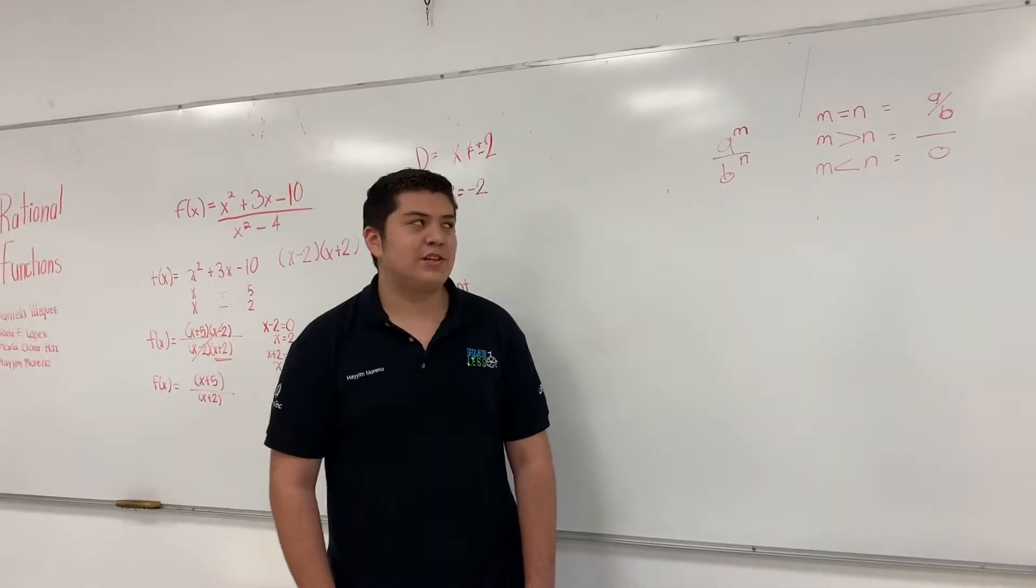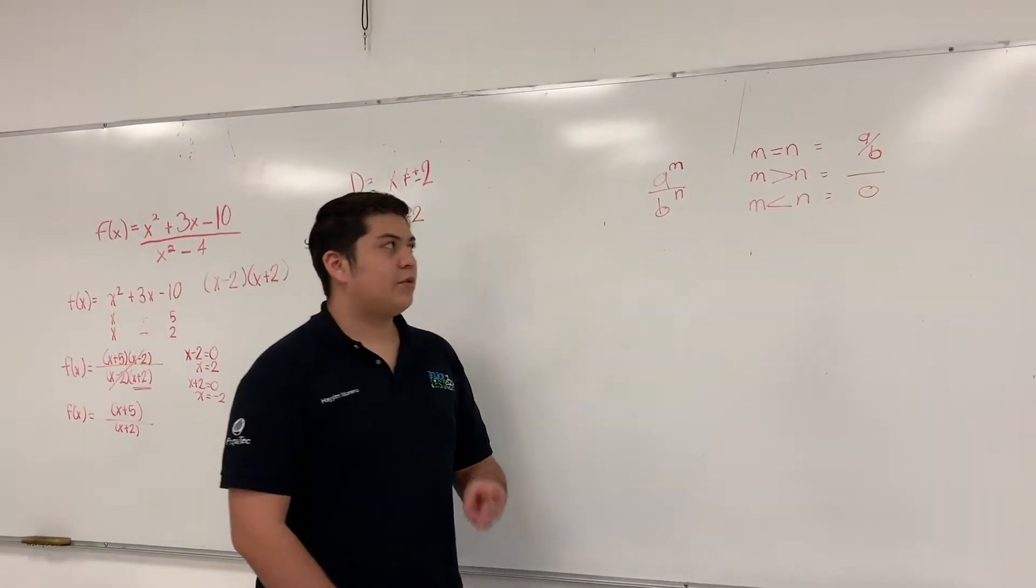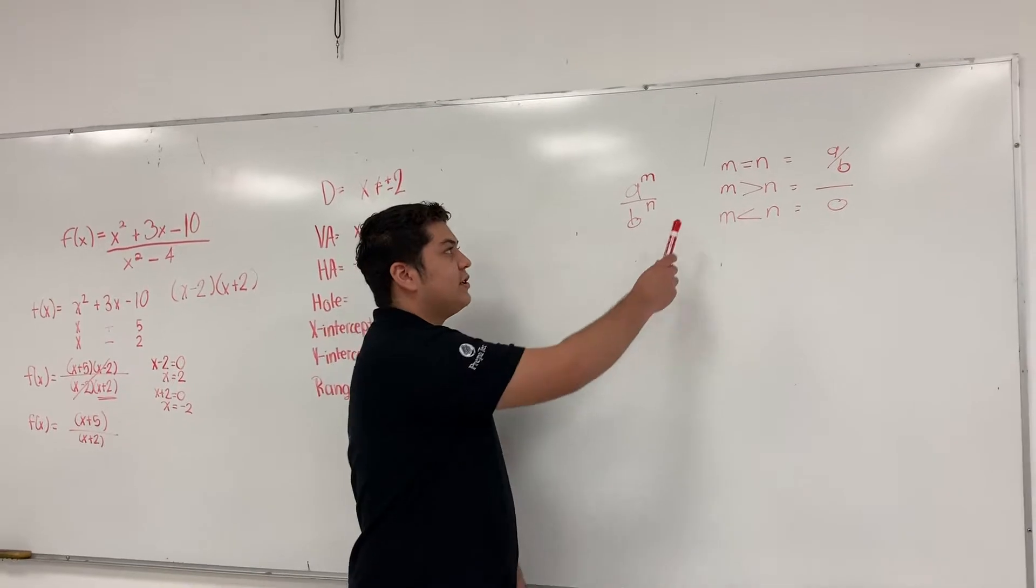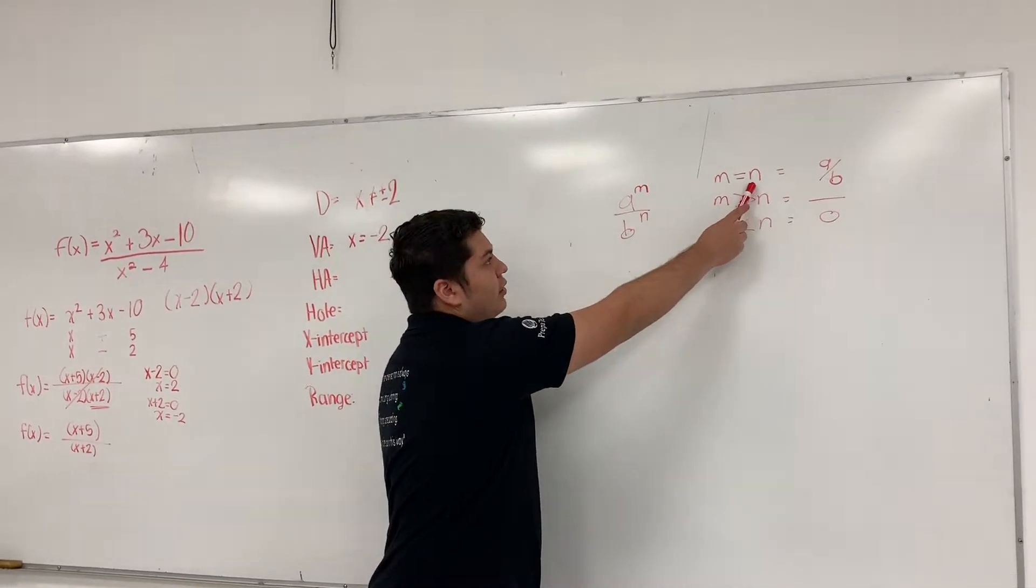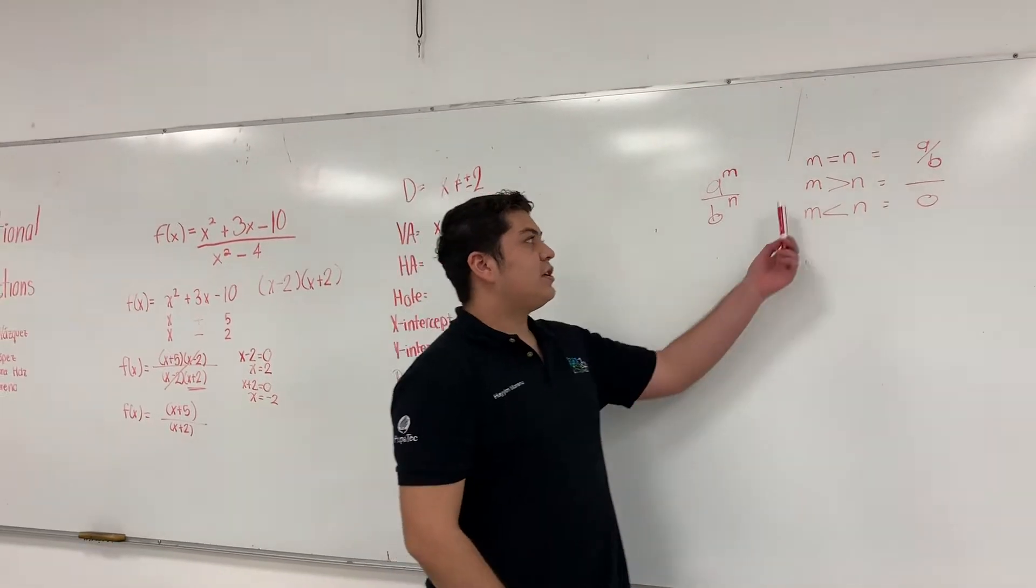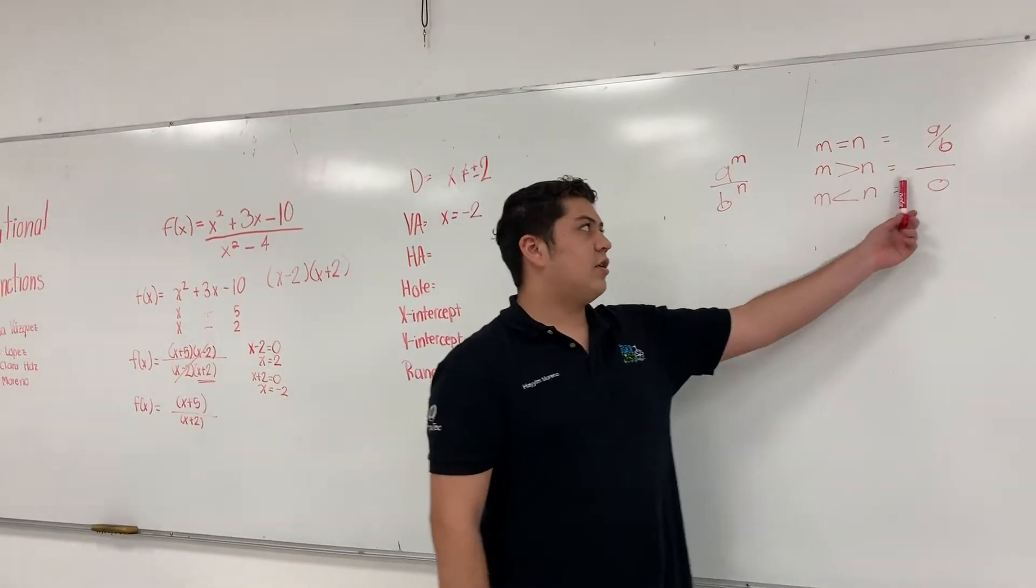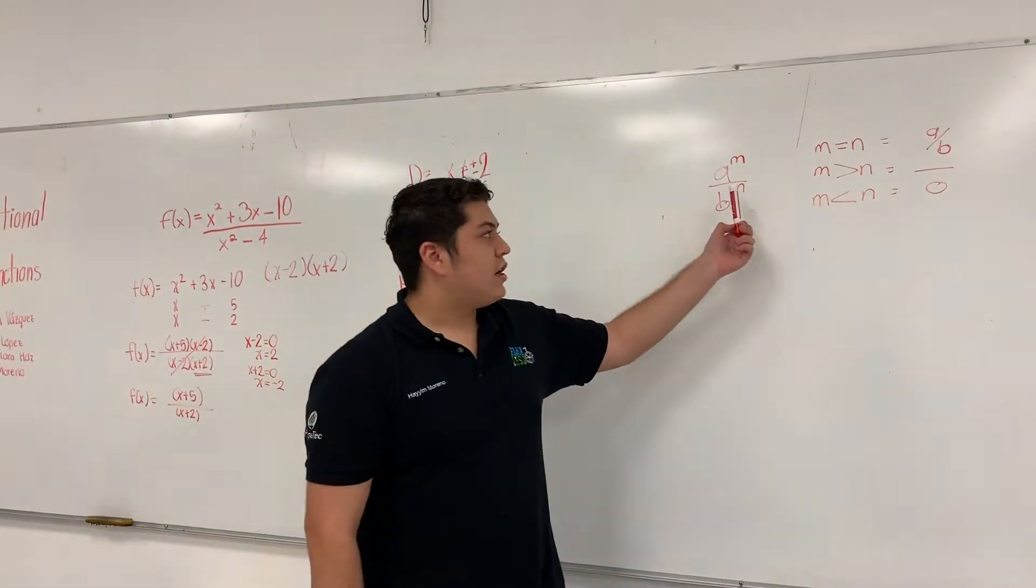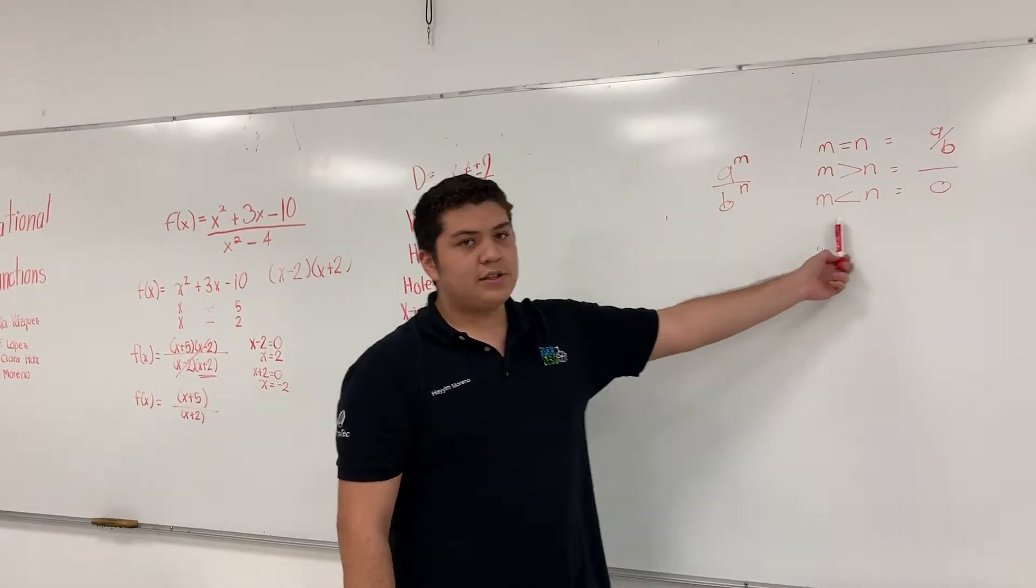For the horizontal asymptote, we have three rules. In this case, it's m equals n. We're going to divide the leading coefficients. If m is greater than n, there is no horizontal asymptote. And if m is less than n, it's 0.